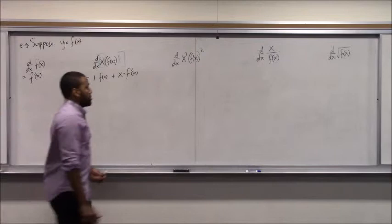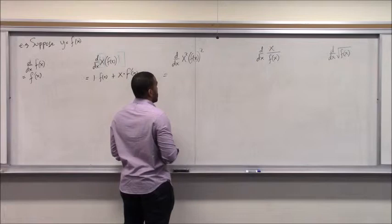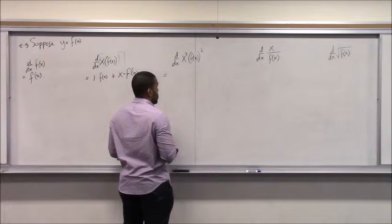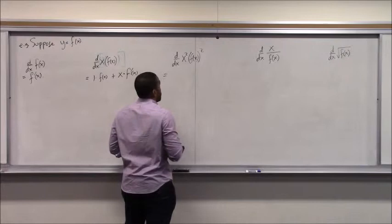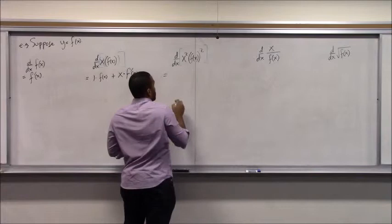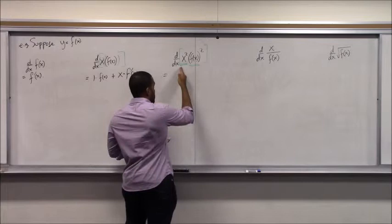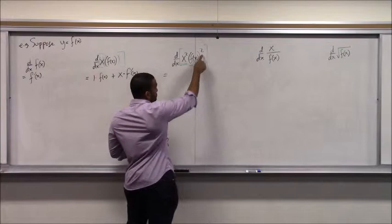What about differentiating x times f(x) squared? What rule would you use? The chain rule and product rule. First you realize there are two functions, so you need the product rule. Then when you're differentiating f(x) squared, you need the chain rule because there's an inside function. The product rule is the first thing.